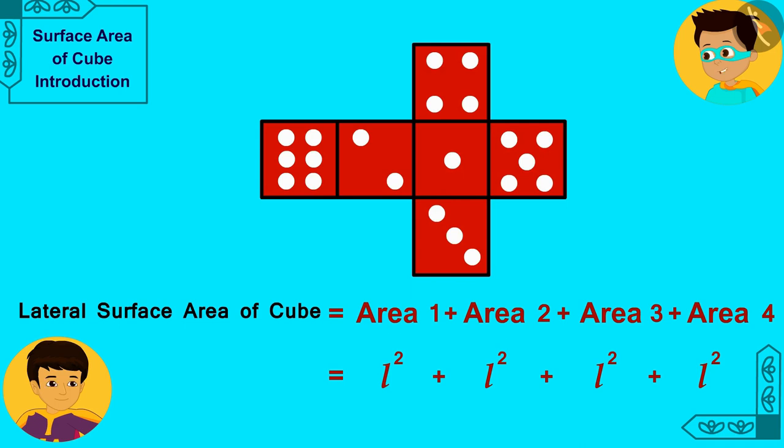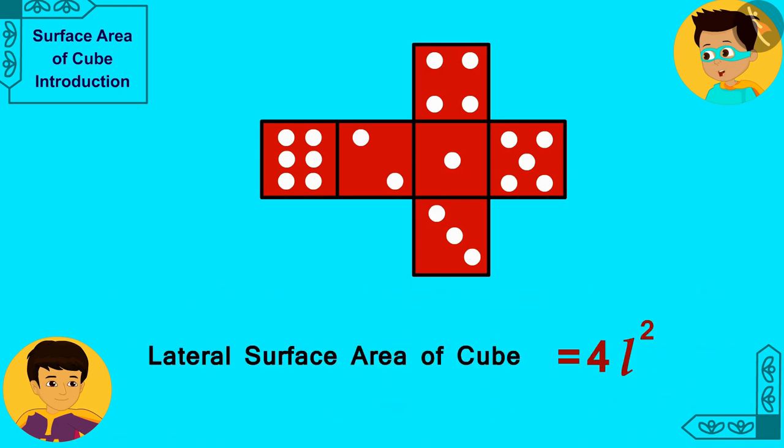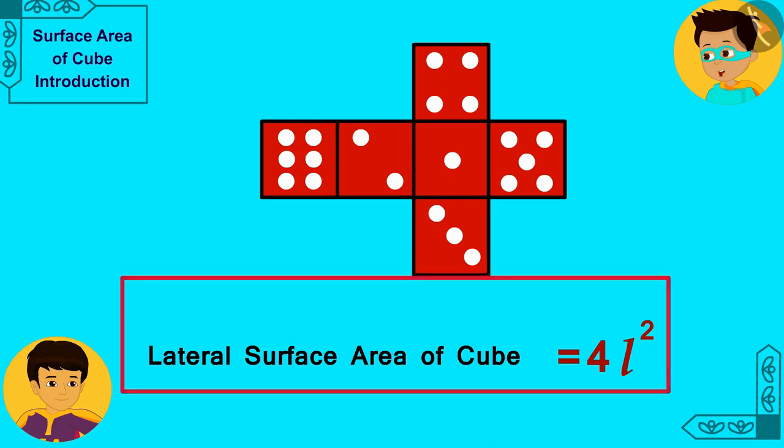This means that the lateral surface area of a cube with sides of length L will be equal to the sum of the areas of these square sides. But, all these square sides are congruent. So, we can write it in this way as well.